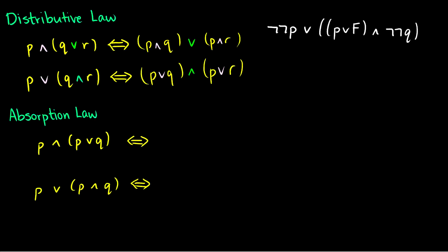Finally, the absorption law. If we have p AND (p OR q), or p OR (p AND q), these both reduce to just p. We can see this clearly with a truth table: p AND (p OR q) is true only when p is true, and p OR (p AND q) is also true only when p is true.